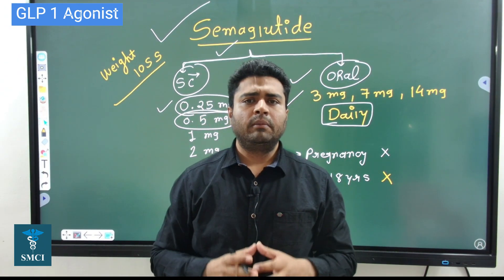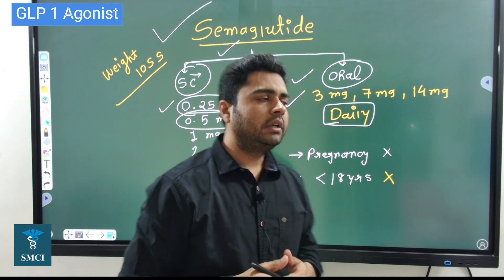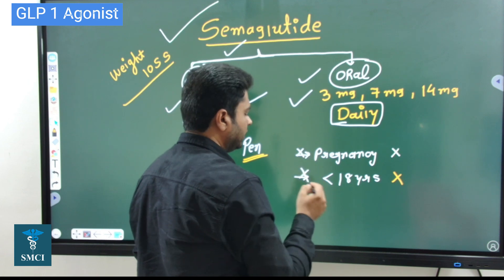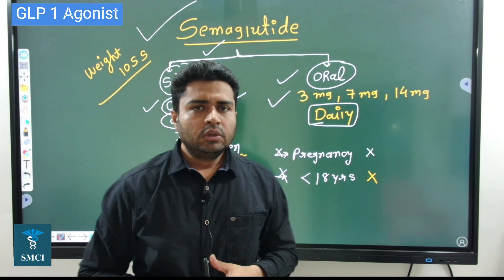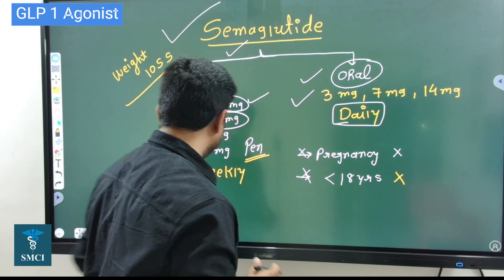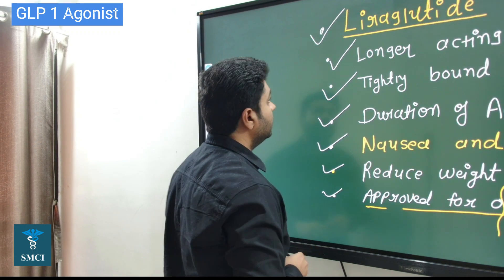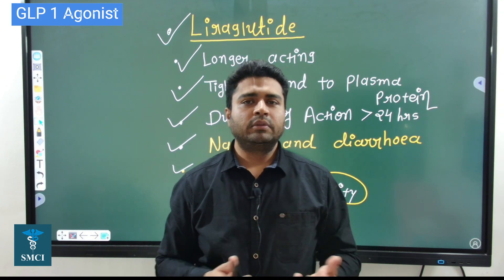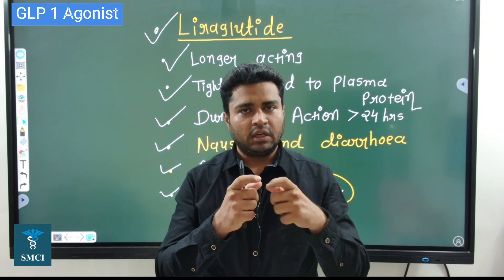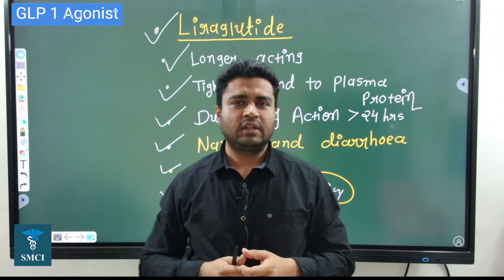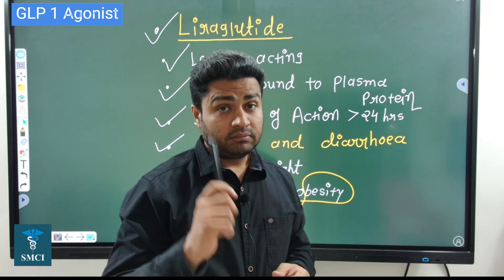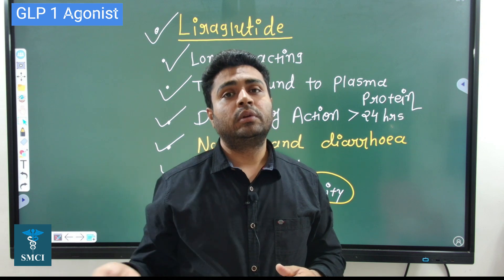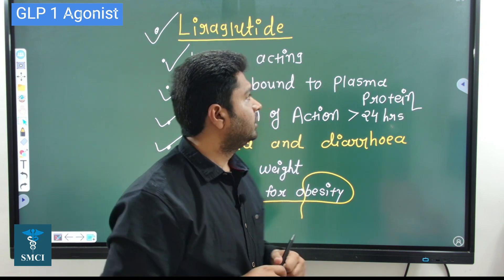Many clinical trials are still remaining to be conducted on semaglutide. In pregnancy it cannot be used, and in the younger age group below 18 years it is still not approved. Remember semaglutide, liraglutide, and exenatide — sema and lira are very important because their use will increase. In type 2 diabetes mellitus we have very few drug groups available to control diabetes; these drugs suppress the appetite, the patient will eat less, which will also benefit type 2 diabetes patients. The use of these drugs would be increased.